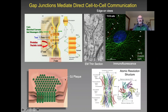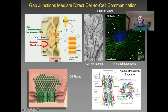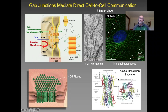These gap junction channels form clusters in the membrane. They are assembled from a protein called Connexin. We can see these clusters by electron microscopy and also by fluorescence light microscopy, labeled here with the arrows along the plasma membrane of the cell. We do have an atomic resolution structure of gap junction channels that helps to ask molecular questions.